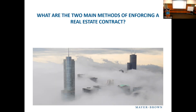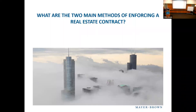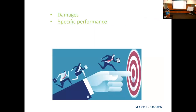You can sue. There are two main theories of suing somebody on a real estate contract. Torts is like a slip and fall, gross negligence, or intentionally harming somebody. The two main ways of enforcing a contract are damages — you lost money because of what the other person did — or specific performance, where you want to force the other person to perform their obligations under the contract.